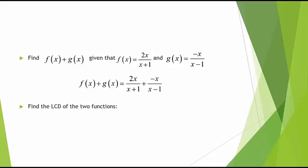Next we have to find the LCD of the two functions since they don't have common denominators. To find the LCD, we simply multiply the two prime distinct denominators together. So the LCD is x plus 1 times x minus 1.